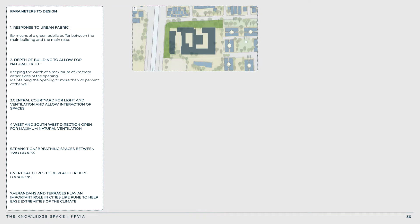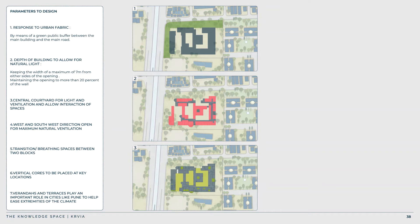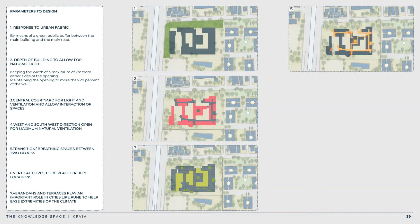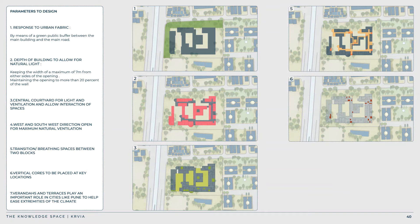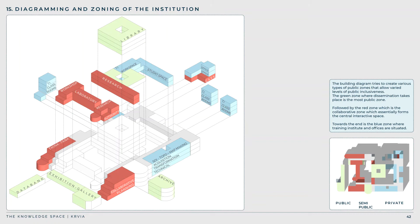Design parameters include: response to urban fabric by means of a green public buffer between the main building and the main road; depth of the building to allow for natural light, keeping the width to a maximum of seven meters from either side of the opening; maintaining the opening to more than 20 percent of the wall; a central courtyard for light, ventilation, and interaction of spaces. West and southwest directions are open for maximum natural ventilation. Verandas and terraces play an important role in cities like Pune to ease climate extremities. The public zone lies between the road, exhibition gallery, and laboratory; the semi-public zone between the laboratory and research unit; and the relatively private zone between the library and training institute.